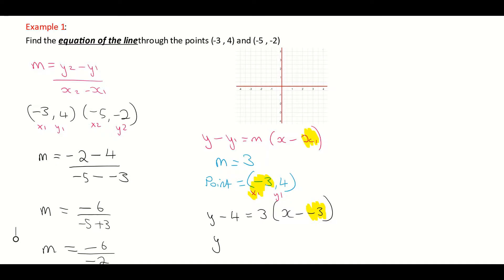So if I work that out, I get y minus 4 is equal to 3, bracket x minus minus, 2 minus has become a plus. And I'm just going to move it up here so I can just make a bit of space here. So I'm just going to rewrite it, y minus 4 is equal to 3, bracket x plus 3.